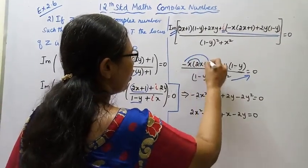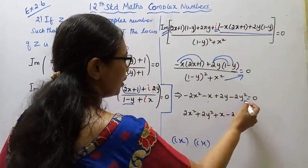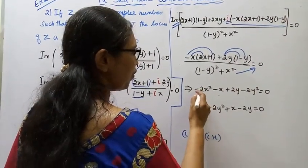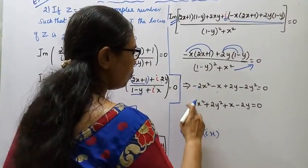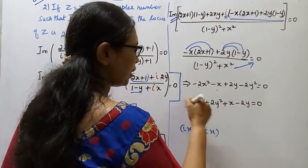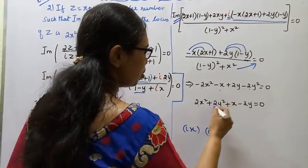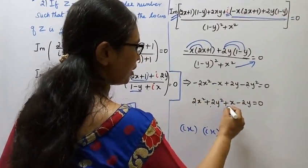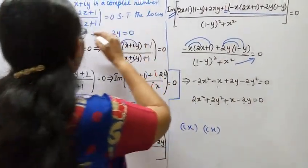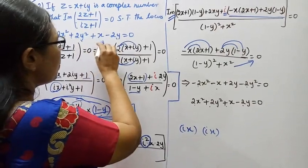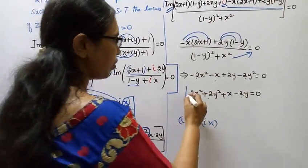After cross-multiplying and simplifying: minus 2x squared minus x plus 2y minus 2y squared equals 0, which rearranges to 2x squared plus 2y squared plus x minus 2y equal to 0. This is the required locus equation.